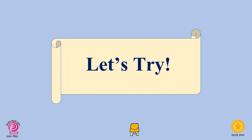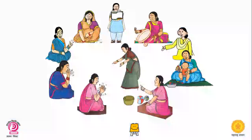Now let's move on to the next activity which is called 'Let's Try.' All the mothers sit in a circle. Write some names on chips of paper and put them in a bowl. When the sound of the spoon begins, pass the bowl to the next mother.